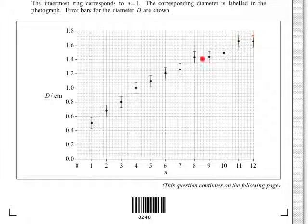The graph shows how the ring diameter D varies with ring number. So as we go from 1, 2, 3, 4, that would be our ring number, and the diameter D would be the size. If we look at the graph, it follows this pattern with some error bars. We have D in centimeters on the y-axis and n on the x-axis.